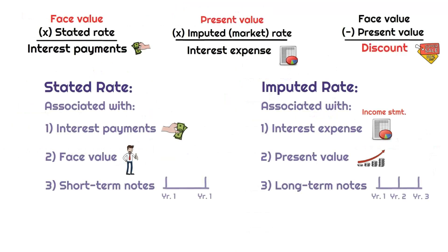To recap: the total payments will equal the face value — you can also think of this as the gross value — whereas the present value, which determines the total interest expense, might result in a discrepancy. That discrepancy is our discount. The discount is very similar to the allowance for doubtful accounts on trade receivables: the net receivable plus the allowance gives you the gross receivable, just as adding the present value to the discount equates to the face value. This discount will be a separate contra account on the balance sheet.